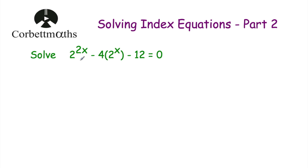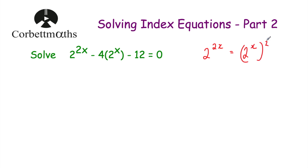So here's our first question: solve 2 to the power of 2x subtract 4 times 2 to the power of x, take away 12 equals 0. To solve this equation, I'm going to focus on the first term, 2 to the power of 2x. I can actually write that as 2 to the power of x squared, because with a power over a power you multiply the powers together. So 2 to the power of 2x equals 2 to the power of x, all squared.